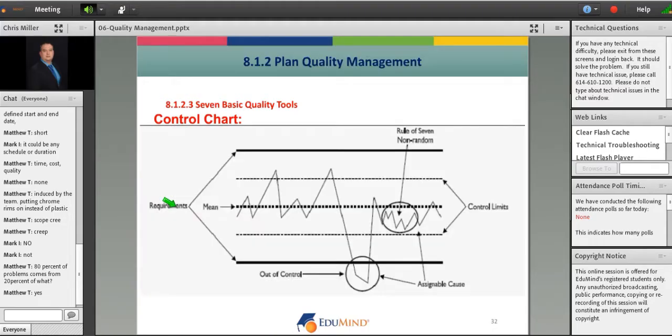So this is what a control chart looks like. Here are your upper and lower specification limits, which are set by the customer requirements. If you have a data point outside of the upper or lower specification limits, it's automatically out of control.